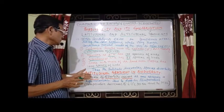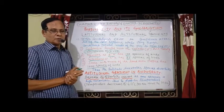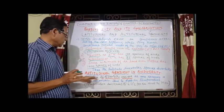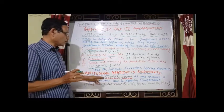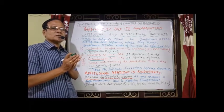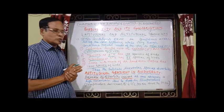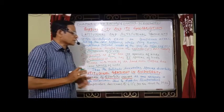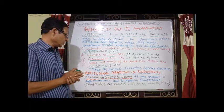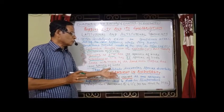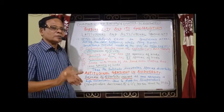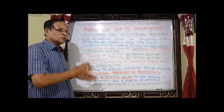Regarding the altitudinal gradient: a decrease in biodiversity occurs as one ascends high mountains. This is because temperature drops at 6.5°C per kilometer above mean sea level. The drop in temperature is the main cause for decreasing biodiversity from valleys and plains to mountains.